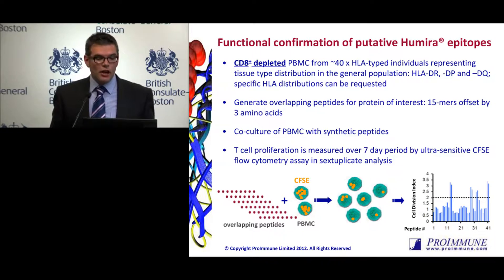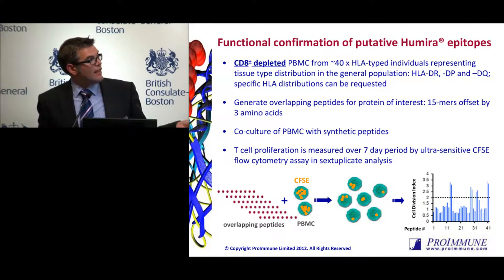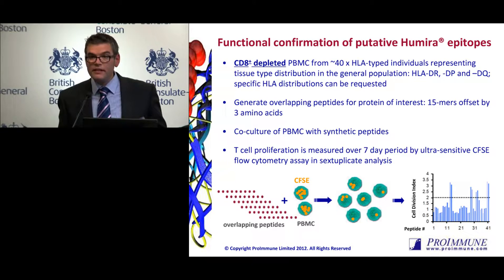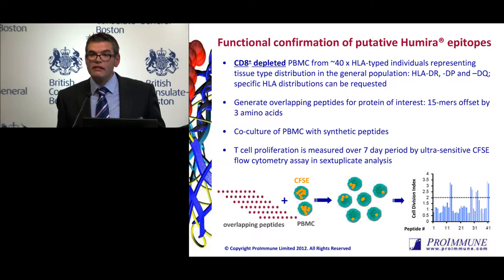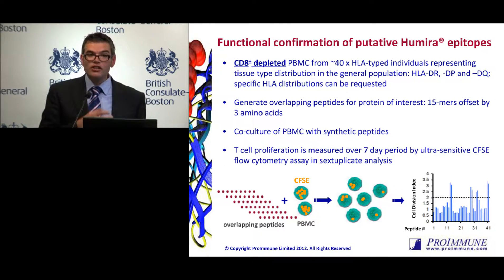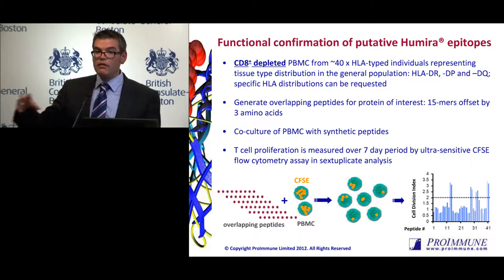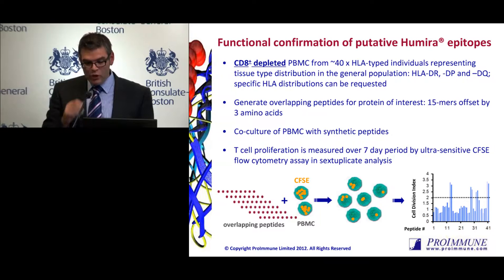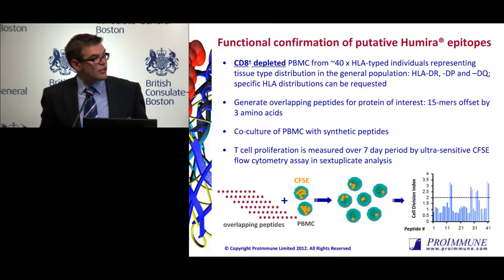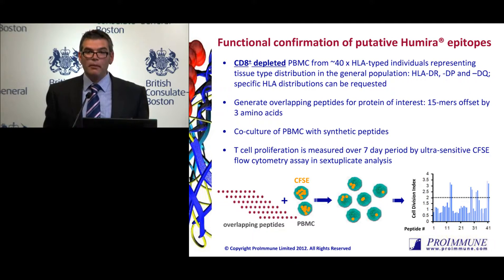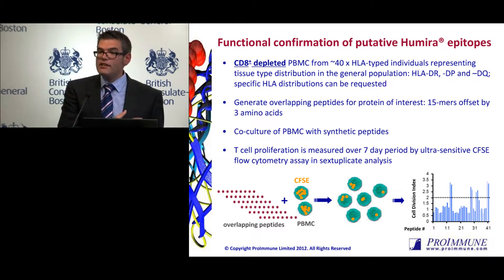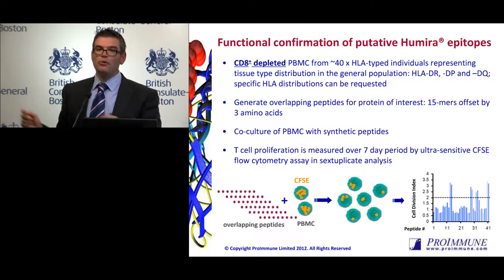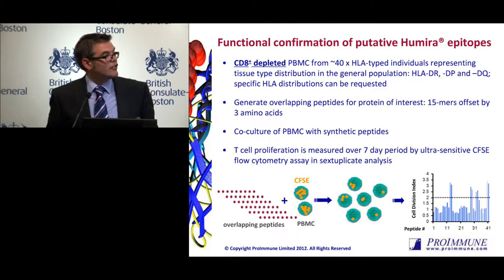To confirm the functional T-cell epitopes, we carry out our PBMC proliferation assays from a panel of typically 40 to 50 healthy donors from our biobank, all CD8 depleted so we're focusing on CD4-positive T-cell responses. We select donors for a broad HLA distribution. This particular study was carried out with the full overlapping set from the variable domain of Humira from the heavy and light chain. Our strategy is to use 15-mer sequences offset by three amino acids, overlapping by 12 amino acids. This allows us to very sensitively map regions causing immune responses — T-cell proliferation in vitro.